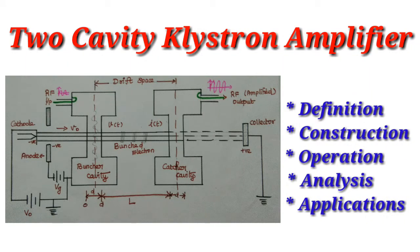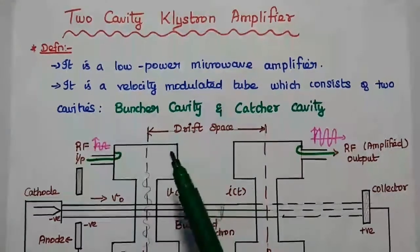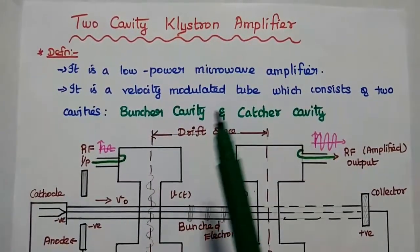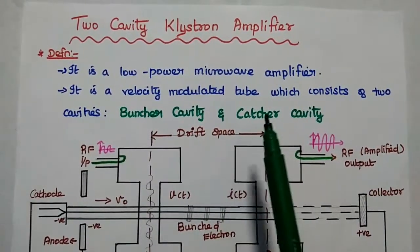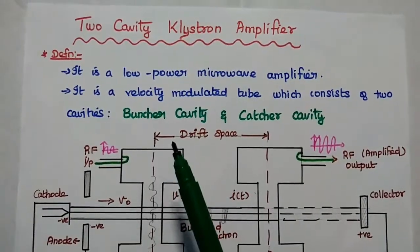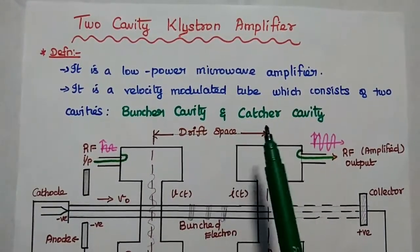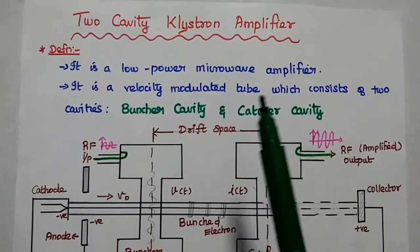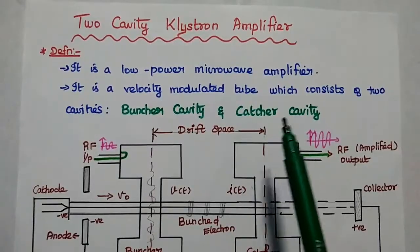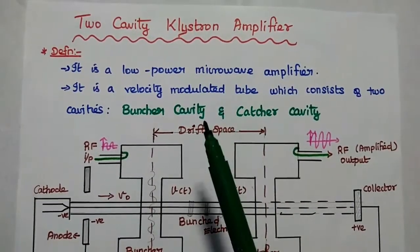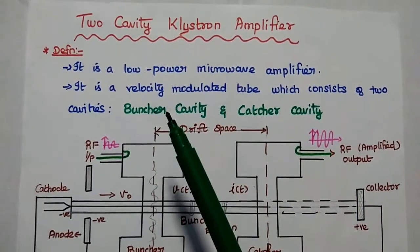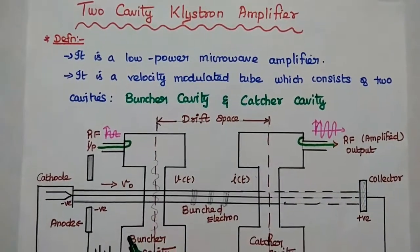Dear students, now we are going to discuss two-cavity klystron amplifier and its applications in detail. The two-cavity klystron amplifier is a low-power microwave amplifier. It is a velocity modulator tube which consists of two cavities: buncher cavity and catcher cavity. These two cavities are resonant cavities. Hence it is called a two-cavity klystron amplifier, and its operation is based on the velocity modulation concept.